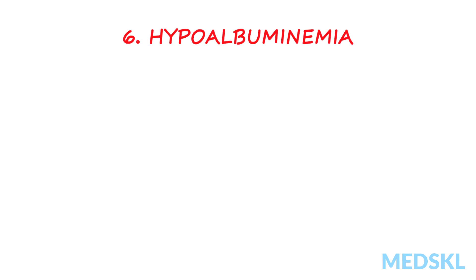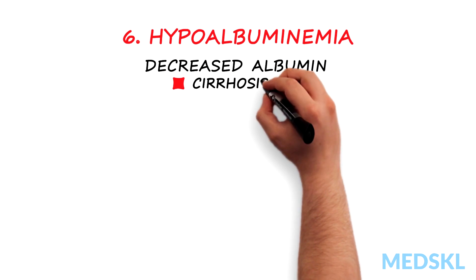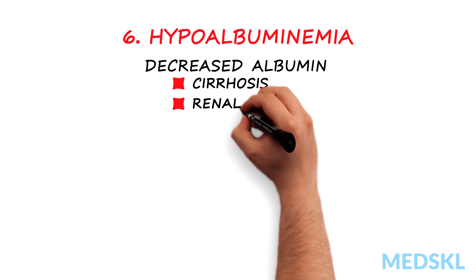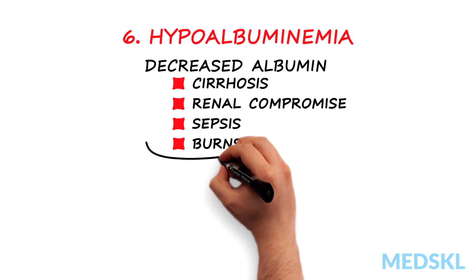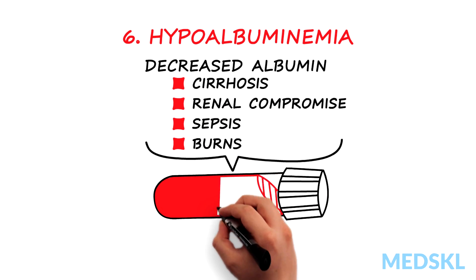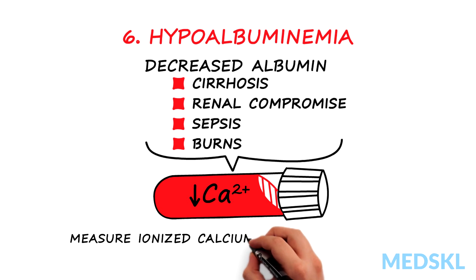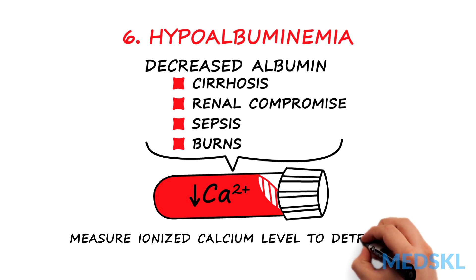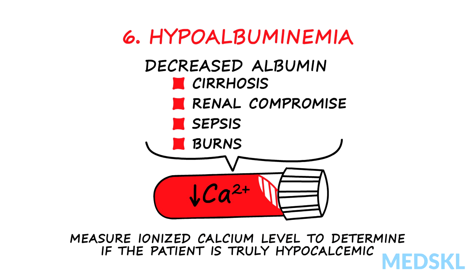Hypoalbuminemia. Serum calcium can be in an ionized form, which is physiologically active, or bound to albumin. Conditions that decrease the body's albumin — for example cirrhosis, renal compromise, sepsis, burns, etc. — may lead to low calcium levels. In these situations, the ionized calcium level is measured to determine if the patient is truly hypocalcemic.